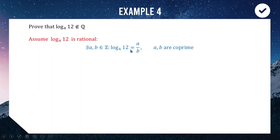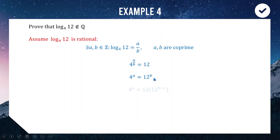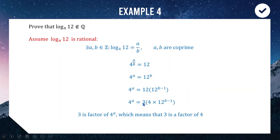Translating to an exponential equation: 4^(a/b) = 12. Raising both sides to the power of b: 4^a = 12^b. Now we need to show this doesn't make sense. We write the right-hand side as 12^1 × 12^(b−1), then replace that 12 with 3 × 4, giving 4^a = 3 × 4 × 12^(b−1). This shows that 3 is a factor of 4^a.